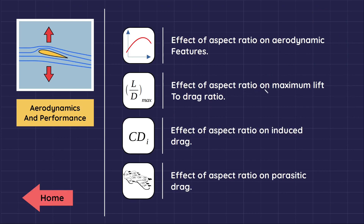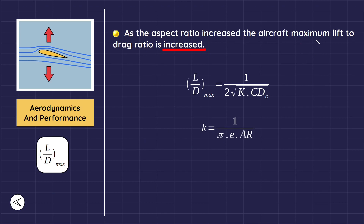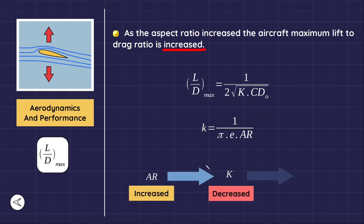As the aspect ratio increases, the aircraft maximum lift-to-drag ratio increases. From the equation of maximum lift-to-drag ratio, where CDO is the aircraft zero-lift drag coefficient and K is the wing induced drag factor — equal to 1 divided by (π × e × AR), where e is Oswald's span efficiency factor — as aspect ratio increases, K decreases, and therefore L/D max increases. This is why gliders have large aspect ratios and long wings.